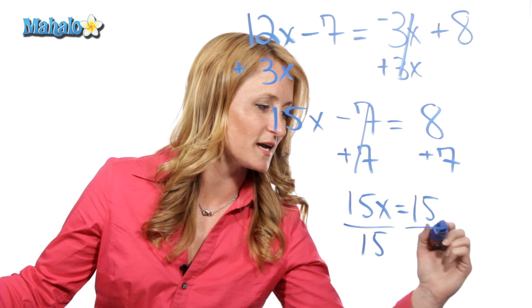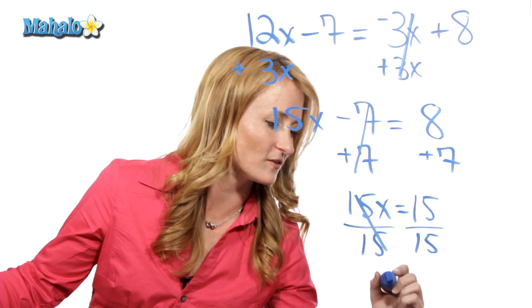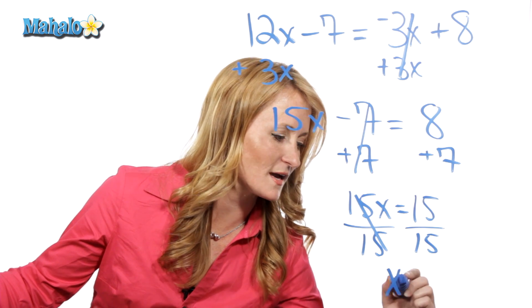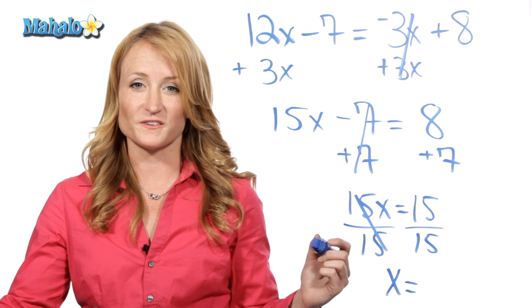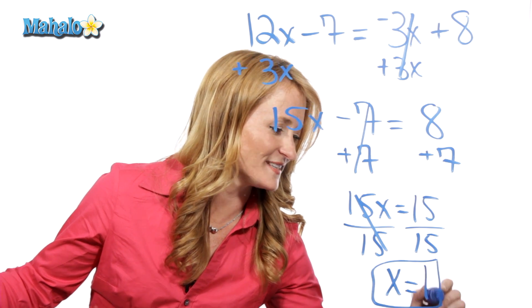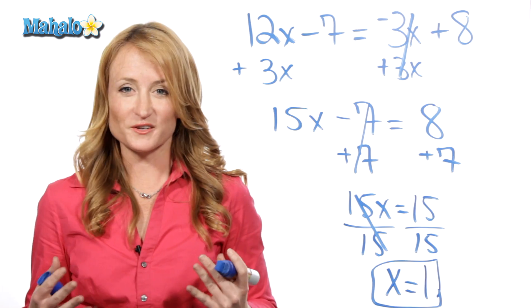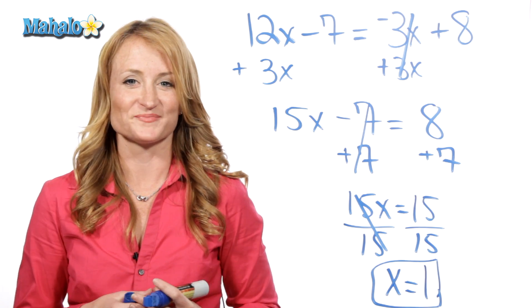So, the opposite of times is divide. We're going to divide both sides by 15, and you're left with x equals 15 over 15, which is 1. And that's how you solve an equation with variables on both sides.